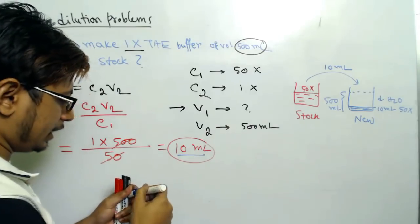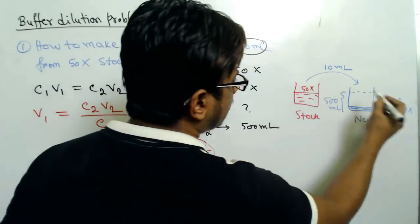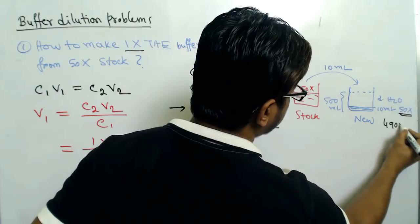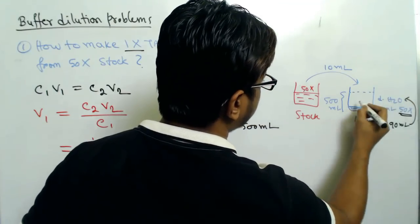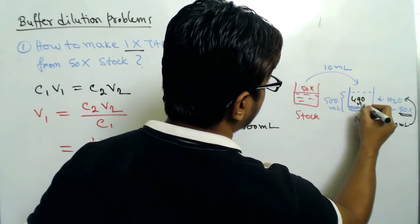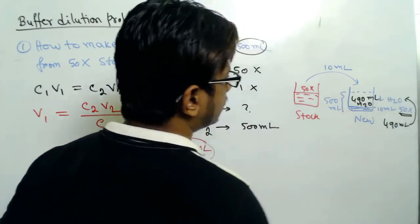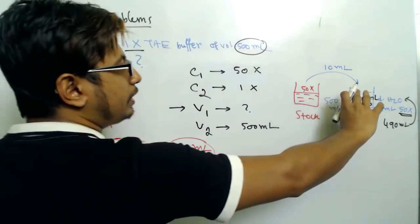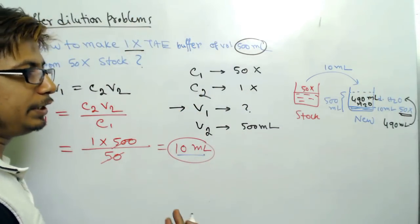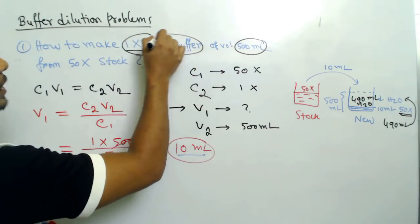So if 10 milliliters is the 50X buffer that we take, then 490 milliliters of distilled water we need to add. That way it will make 500 milliliters of new 1X TAE buffer.